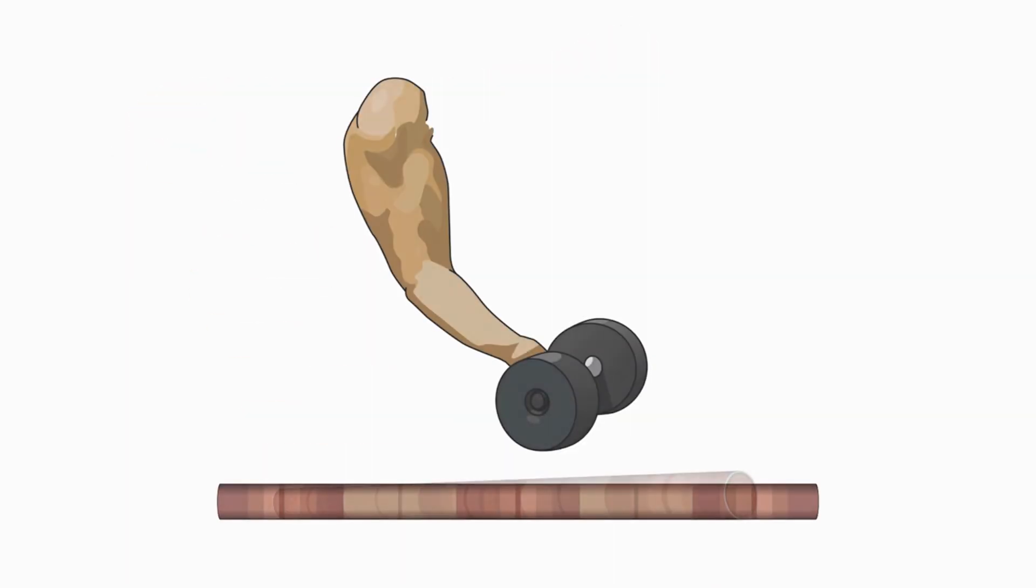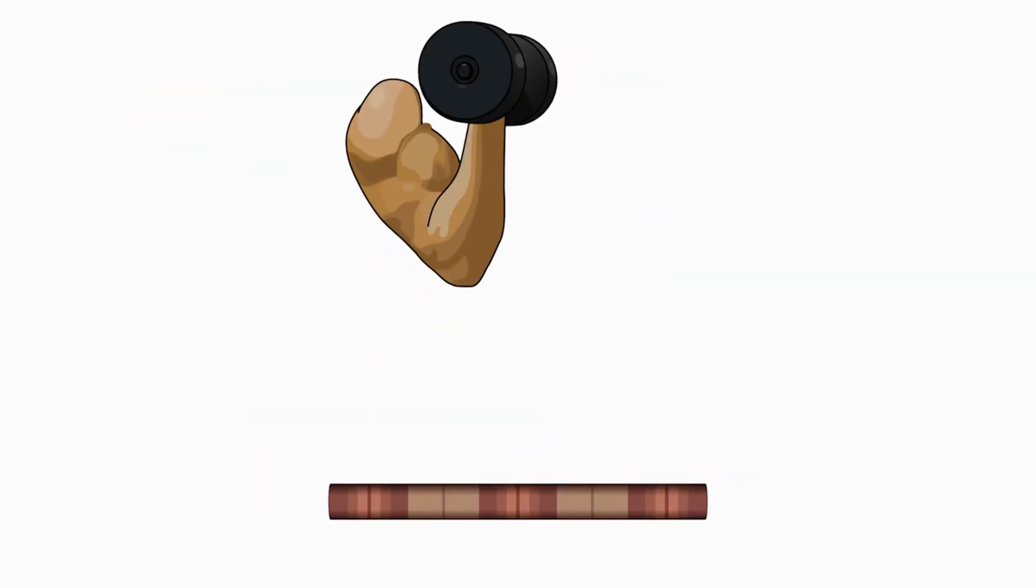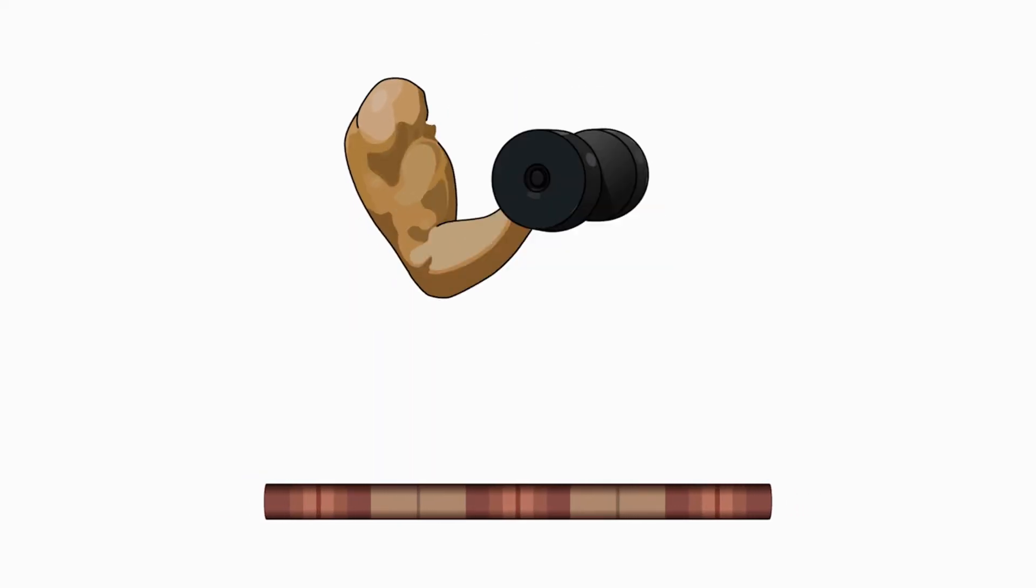Each of these striped areas contract and relax. When all of these strands contract or relax in a muscle tissue at the same time, it causes movement.